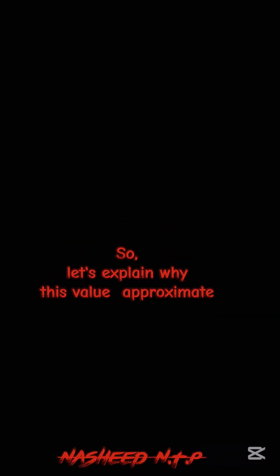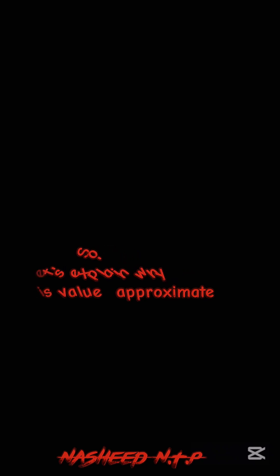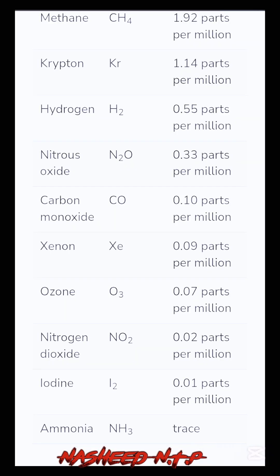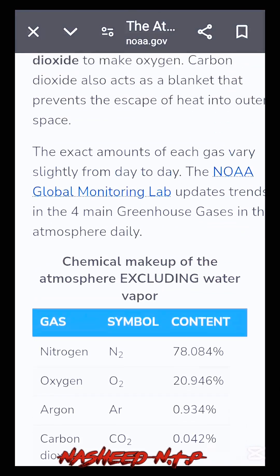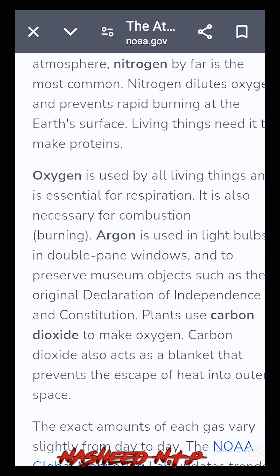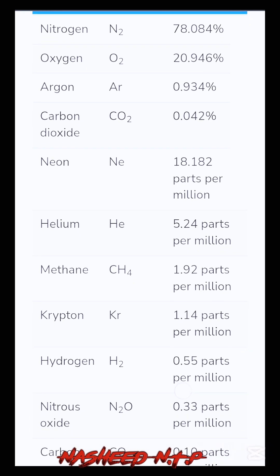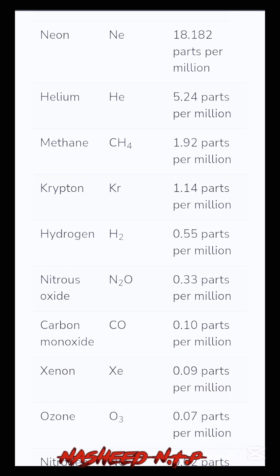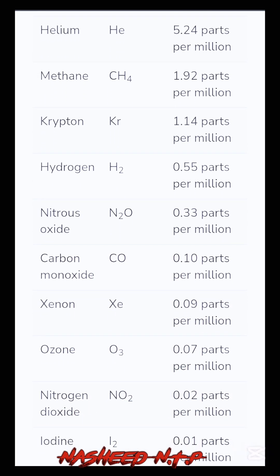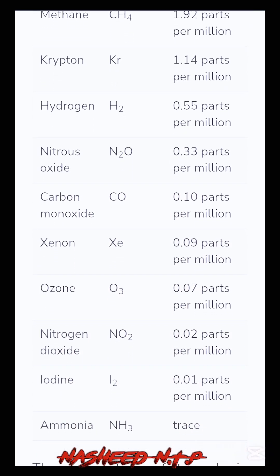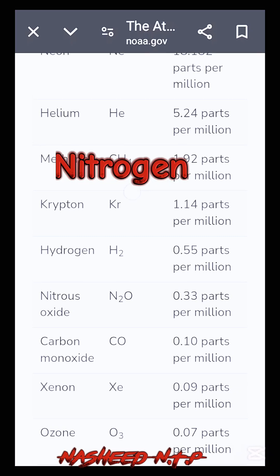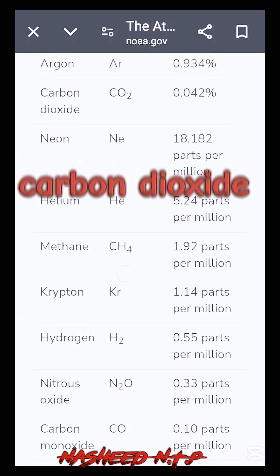So let's explain why this value is approximate. First, let's talk about the elements of the atmosphere. I have not worked out the atomic numbers of all the elements in the atmosphere — I only worked out the atomic numbers of oxygen, nitrogen, carbon dioxide, and argon. There are also many other reasons which cannot be exhausted.